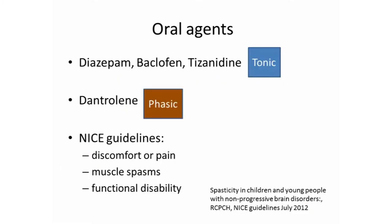Oral agents like diazepam, baclofen, and tizanidine all modify the tonic aspect of spasticity while ignoring the other three subcomponents, whereas dantrolene works on the phasic aspect. By the NICE guidelines, you can use oral agents for discomfort or pain, muscle spasms, or functional disability. All these drugs have side effects — constipation or cognitive changes — so there's a limit to how much you can use.